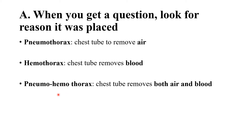For pneumohemothorax, a chest tube is used to remove both air and blood. So to summarize: pneumothorax — remove air; hemothorax — remove blood; pneumohemothorax — remove both air and blood. It is simple.